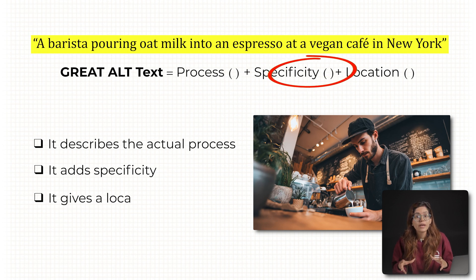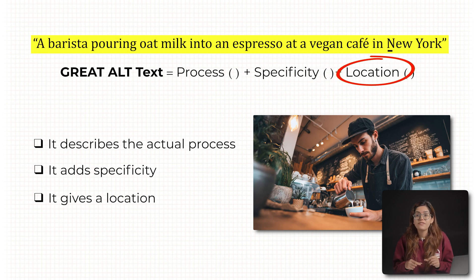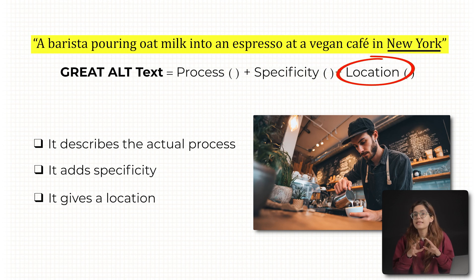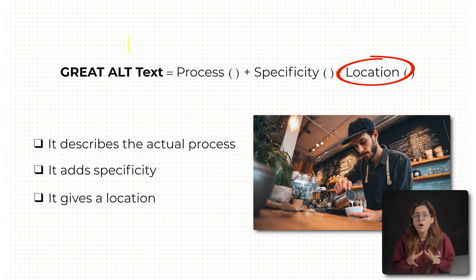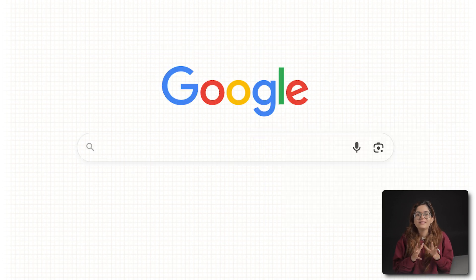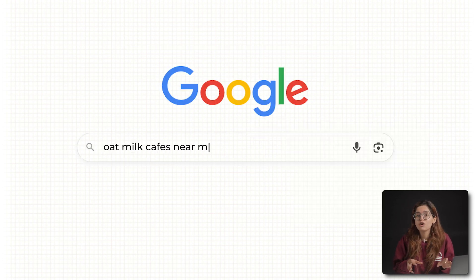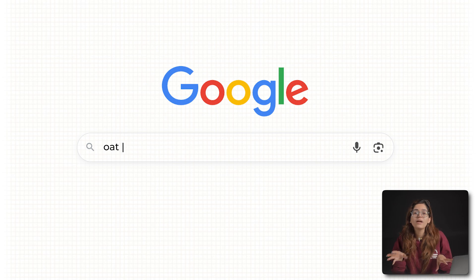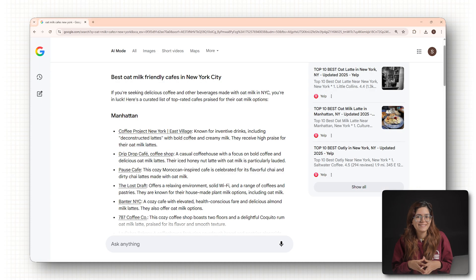Number three: it gives location. 'New York' isn't just fluff — it tells AI where this is happening. And if you want to go even deeper, call it 'a vegan cafe in downtown New York', or Bushwick, or SoHo — something hyper-local. That's how, when someone searches 'oat milk cafes near me' or 'vegan espresso shots', your content gets shown in the answer.